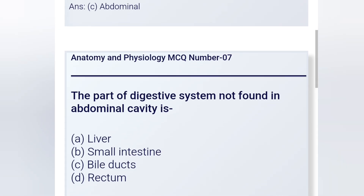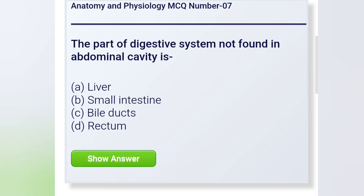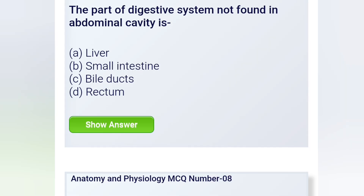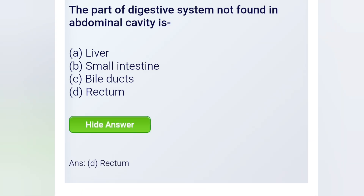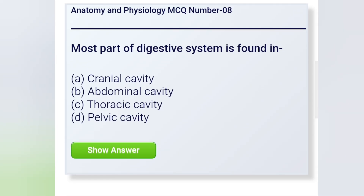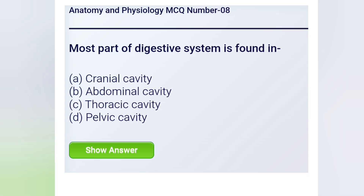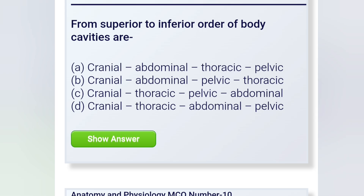Next question: The part of the digestive system not found in the abdominal cavity is — the correct answer is the Rectum. Next question: Most part of the digestive system is found in — the correct answer is the Abdominal cavity.